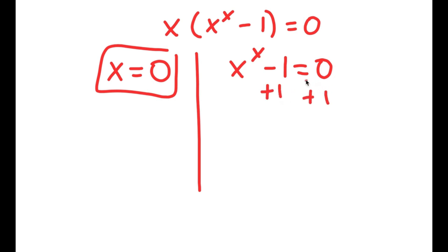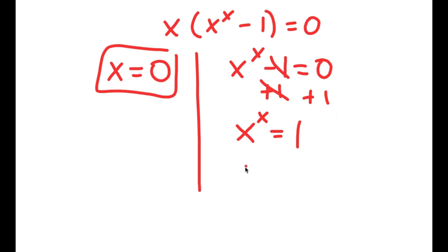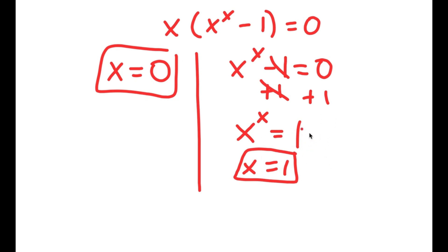For x to the power of x minus 1 equals 0, I'm going to add 1 on both sides. These two cancel out, and I get x to the power of x is equal to 1. Because x has to be the same number, what number to the power of itself equals 1? That's going to be 1, because 1 to the power of 1 is 1. So x equals 1 is the only solution to this equation.